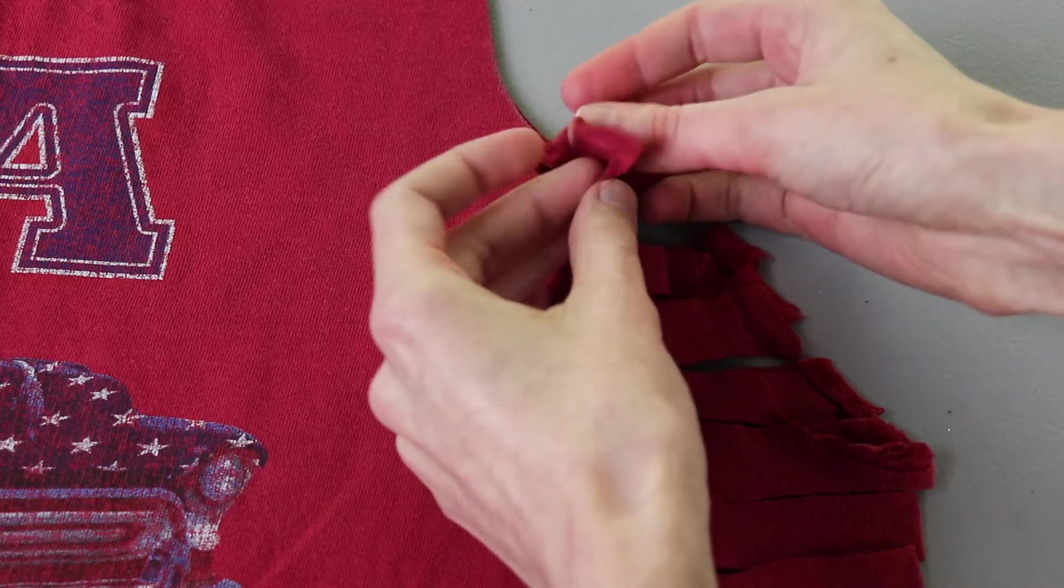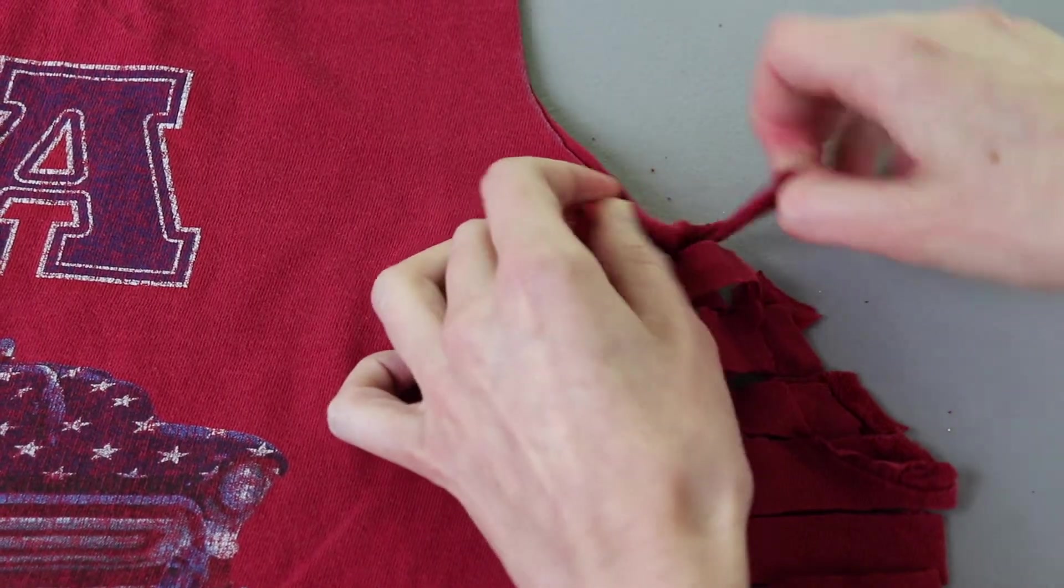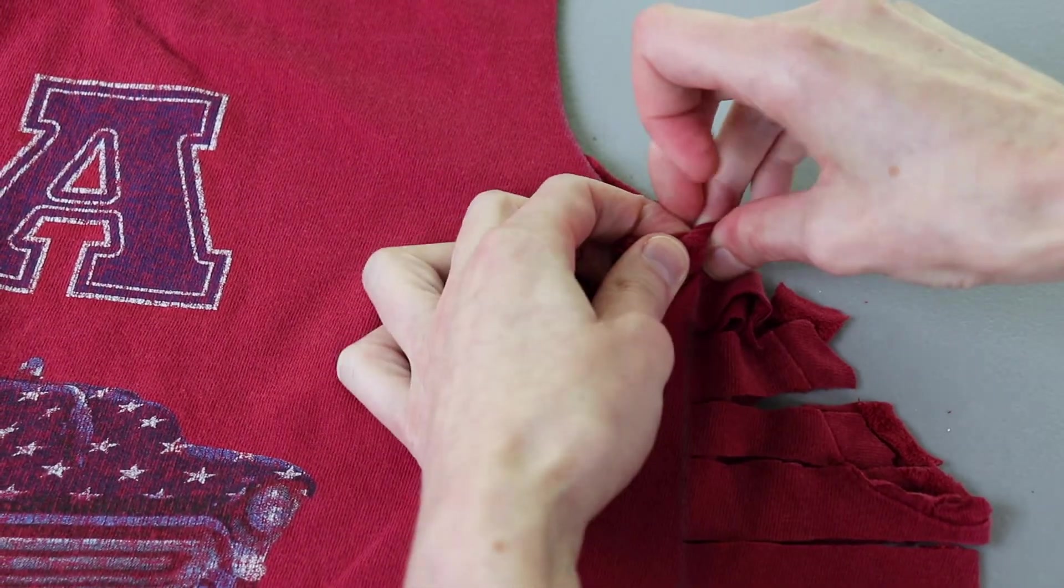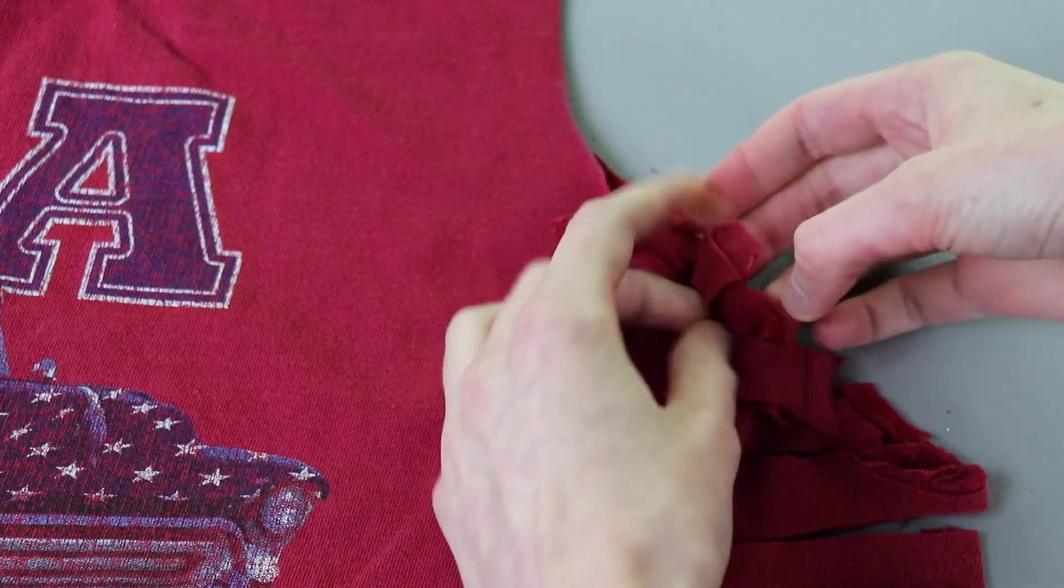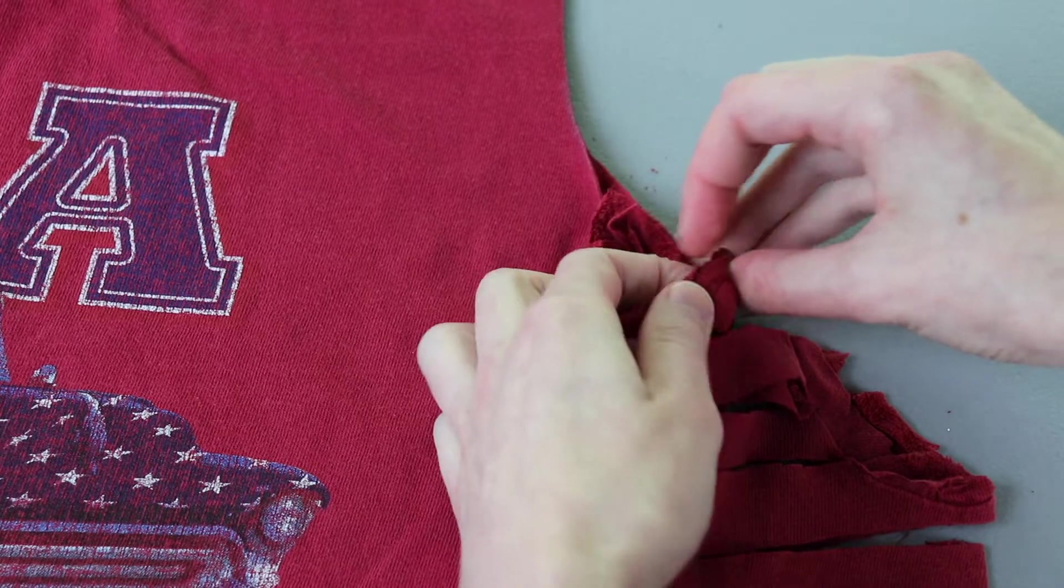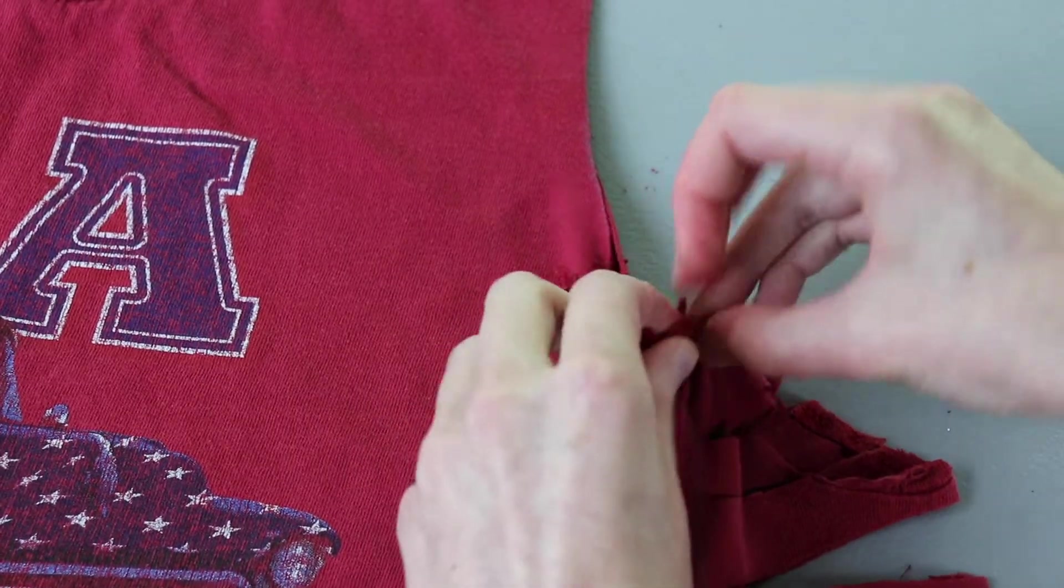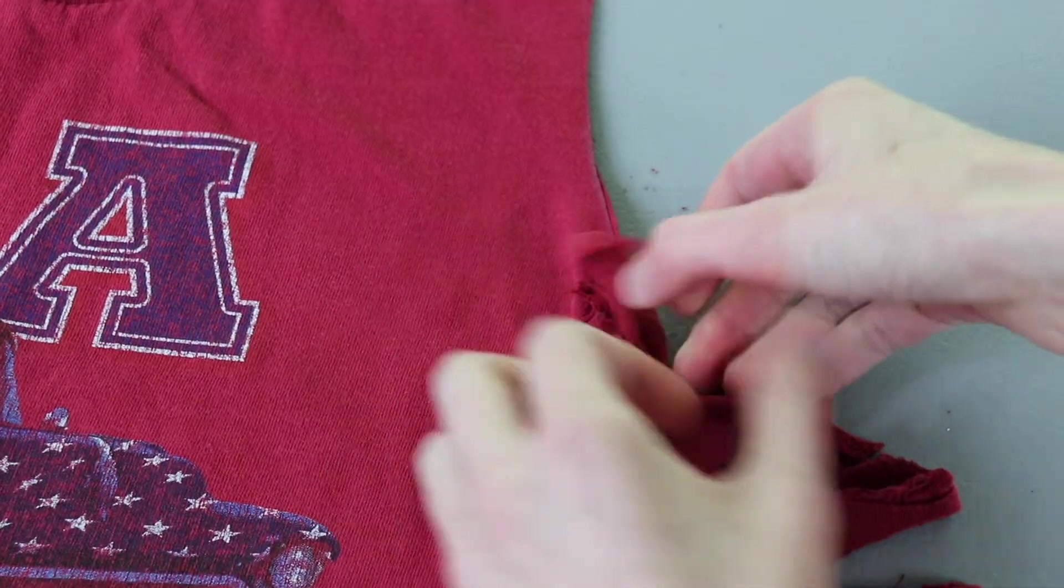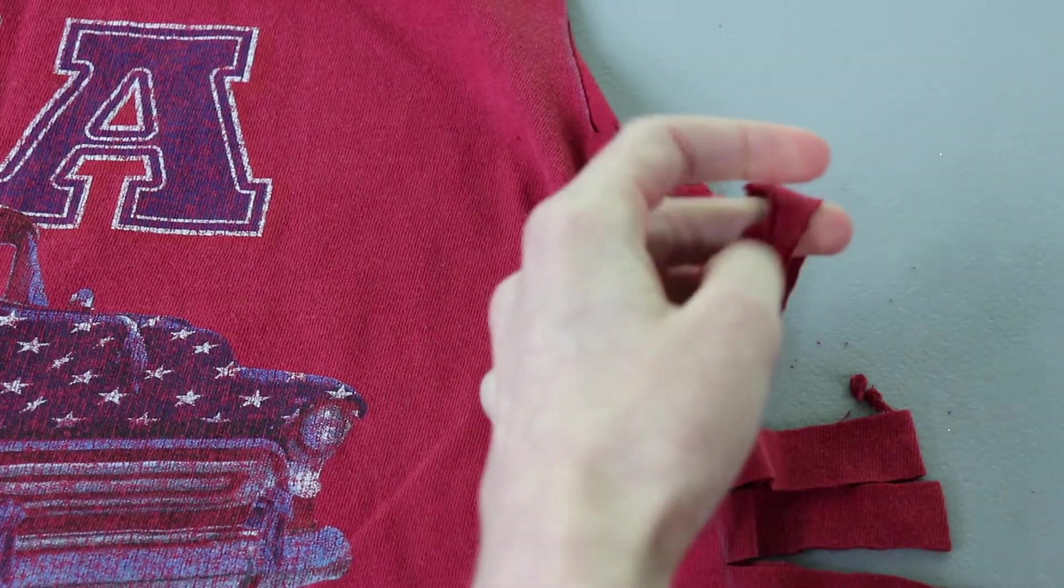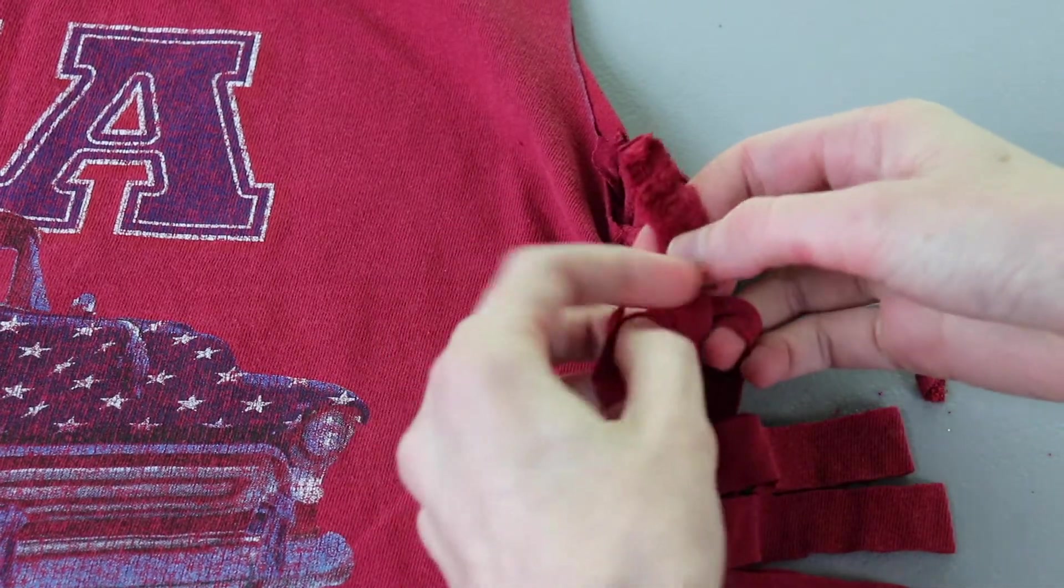I'm going to take my two ends from either side of the shirt and just do a basic overhand knot. Tighten it up and then do a second one. Go to my next tails. Do two overhand knots. Once I reach these ones that are still tied together I'll just cut the loop and keep repeating this process all the way down the side.